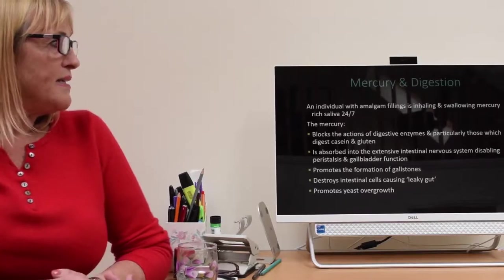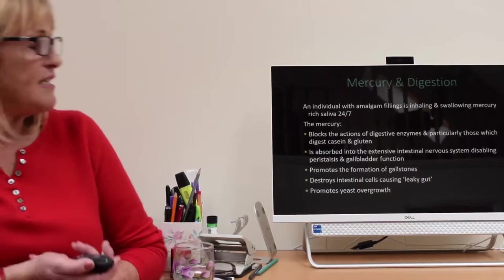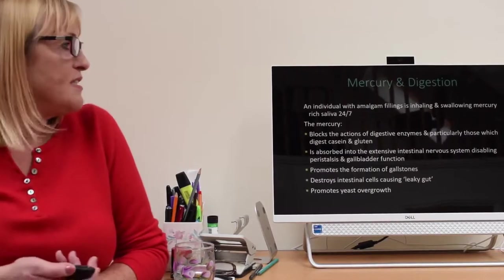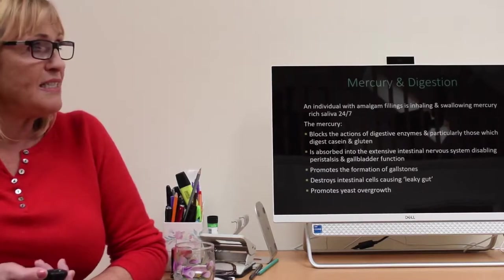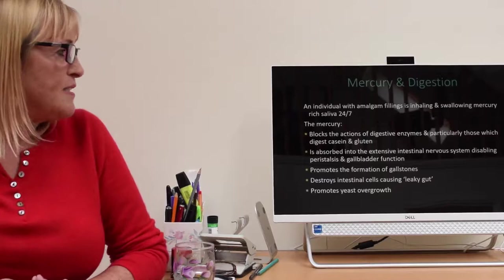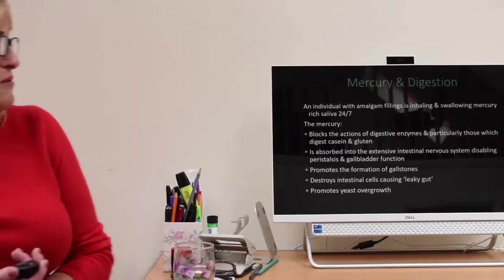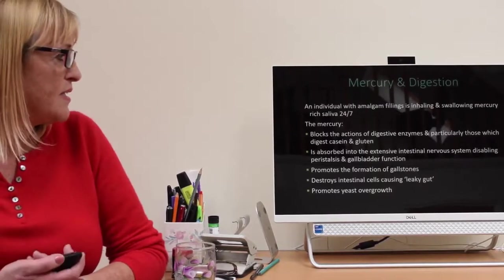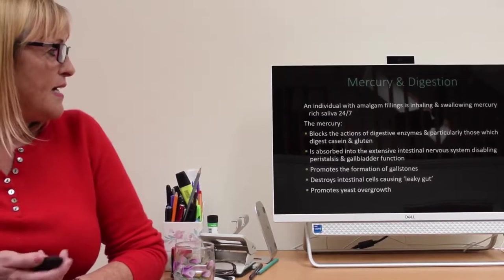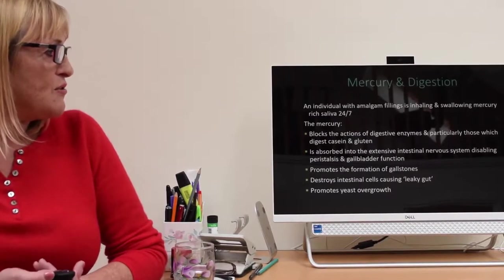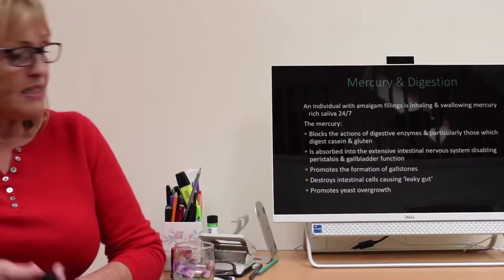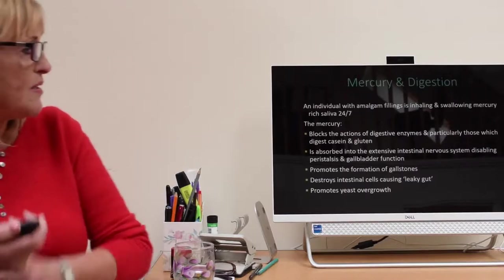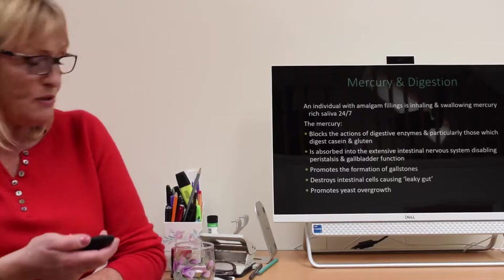You're swallowing and inhaling mercury 24-7 if you've got amalgam fillings. This blocks the actions of digestive enzymes, particularly those that digest casein and gluten. I think we were discussing this earlier. It's absorbed into the extensive intestinal nervous system. That disables peristalsis which is the movement of food along the gut and gallbladder function. It promotes the formation of gallstones. It destroys intestinal cells causing leaky gut, where foodstuffs can get through between cells. They've not got tight junctions. It also promotes yeast overgrowth.